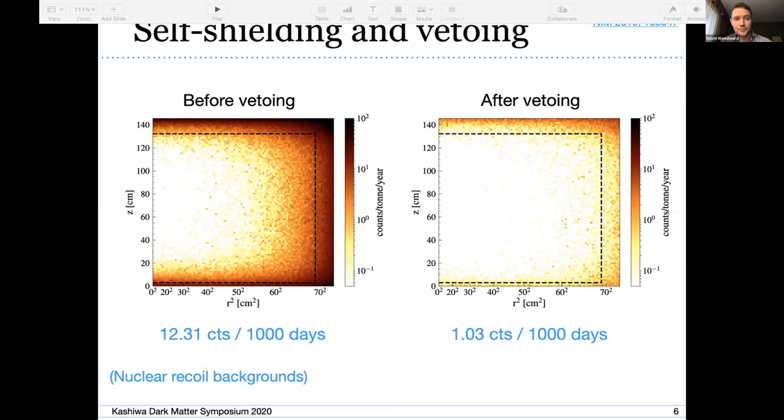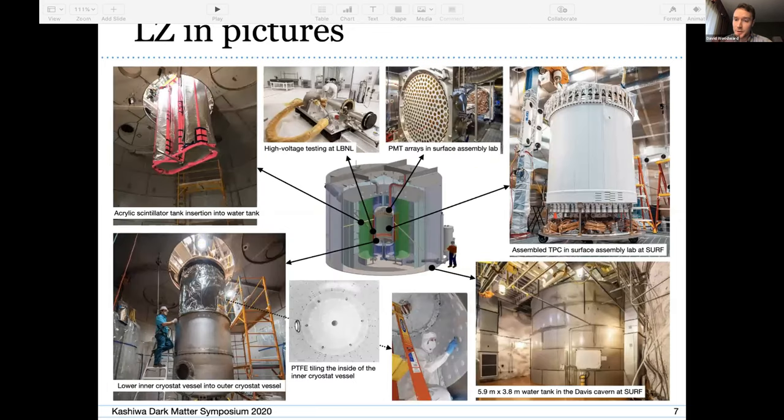The next couple of slides are just going to show you some pictures of the progress of LZ and take you from a CAD model into real life. The top left is the acrylic tanks that we use to house the gadolinium loaded liquid scintillator, that's the outer detector, that's being lowered into the water tank here. You have the components of the TPC on the top right, so you have the high voltage, we did some testing at LBL for that.